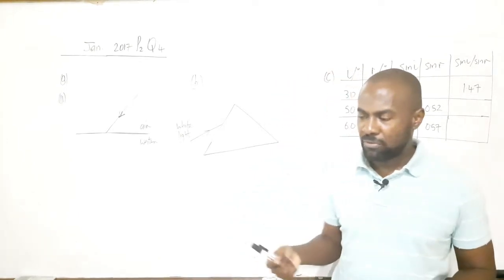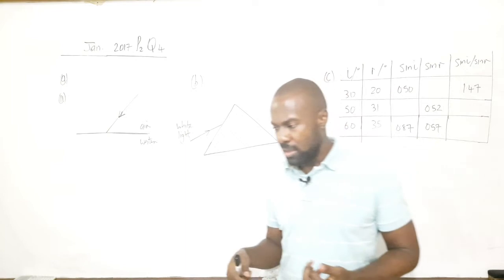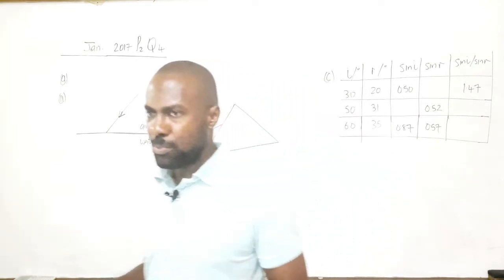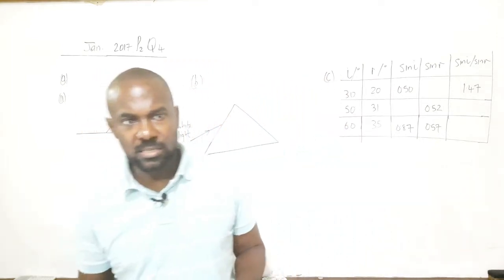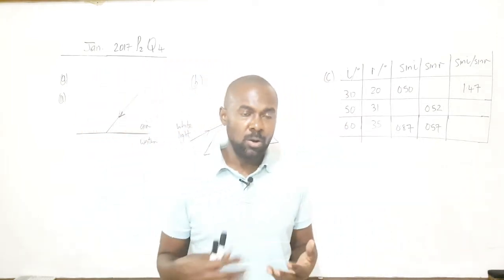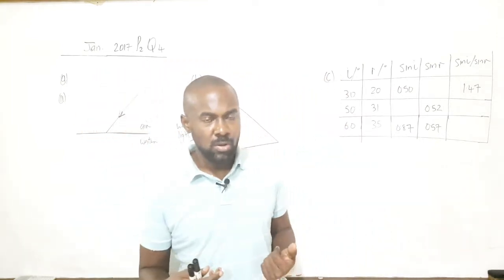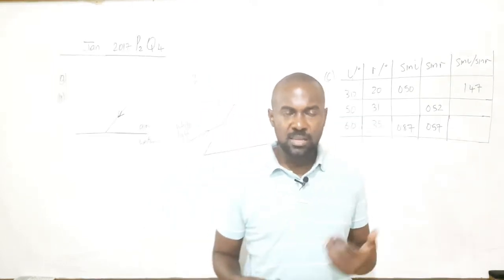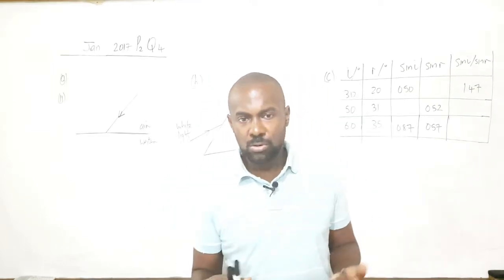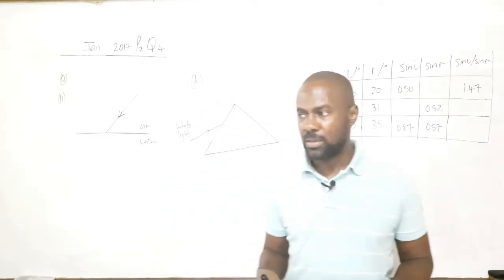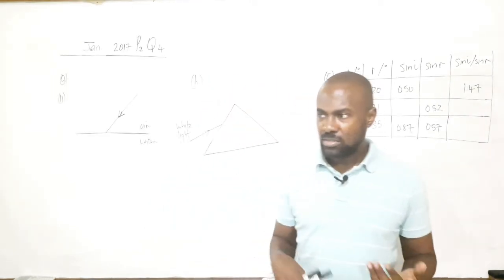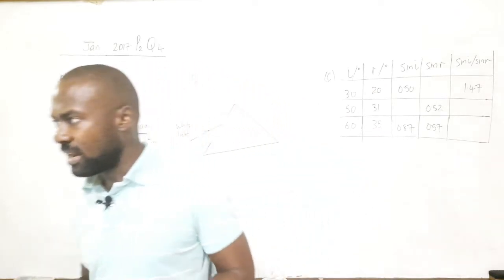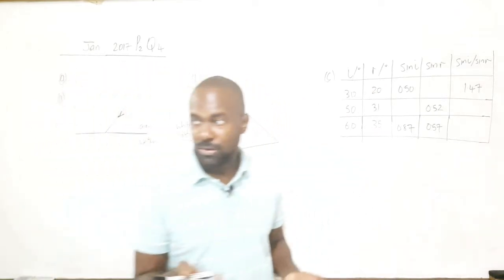Also, pools appear to be shallower than they actually are due to refraction. If an object is at the bottom of the pool and you look at it, it appears to be closer to the surface than it really is. This is due to refraction. So those are two observations which provide evidence that light can be refracted.